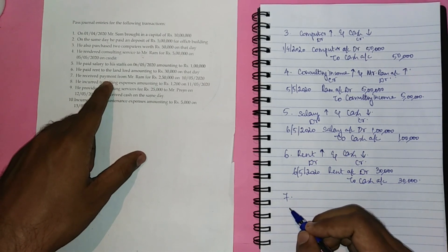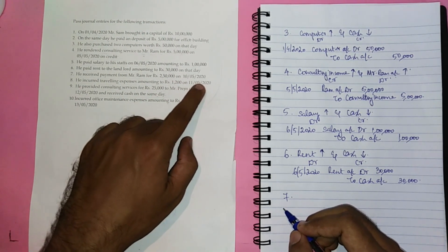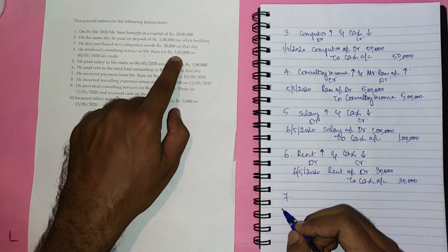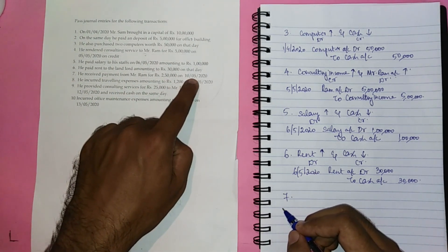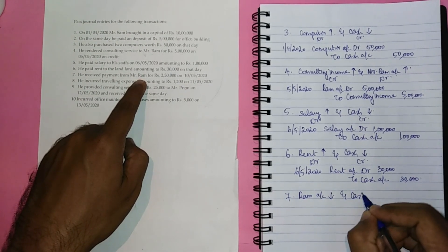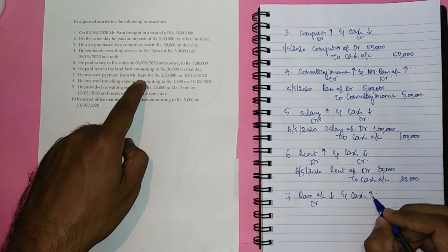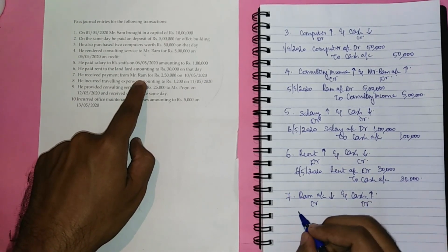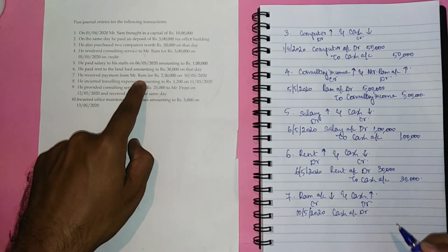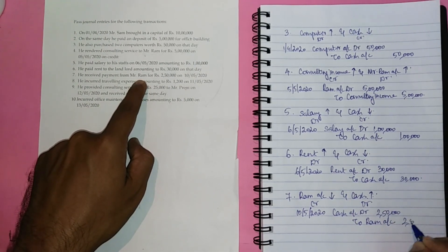The seventh transaction: he received payment from Mr. Ram for Rs. 2 lakh 50,000 on 10th May 2020. In the fourth transaction, he provided consulting services to Ram on credit for Rs. 5 lakh, and out of which, Rs. 2 lakh 50,000 he is receiving on 10th May 2020. So Mr. Ram's debtor account gets reduced and cash balance gets increased. When an asset account reduces, it needs to be credited, and when another asset account is increasing, it needs to be debited. The entry is: on 10th May 2020, Cash account debit, to Ram account, Rs. 2 lakh 50,000.